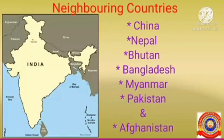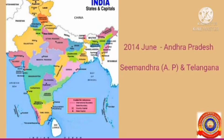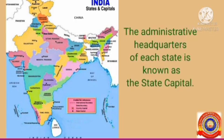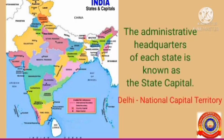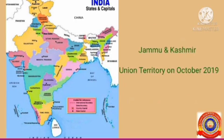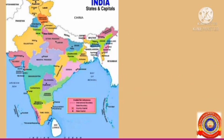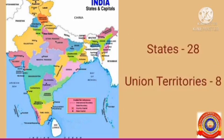The neighboring countries of India are China, Nepal, Bhutan, Bangladesh, Myanmar, Pakistan, and Afghanistan. For administrative convenience, India is divided into 29 states. In June 2014, Andhra Pradesh was divided into two states: Seemandra and Telangana. The administrative headquarters of each state is known as the state capital. Delhi is the national capital territory of India.